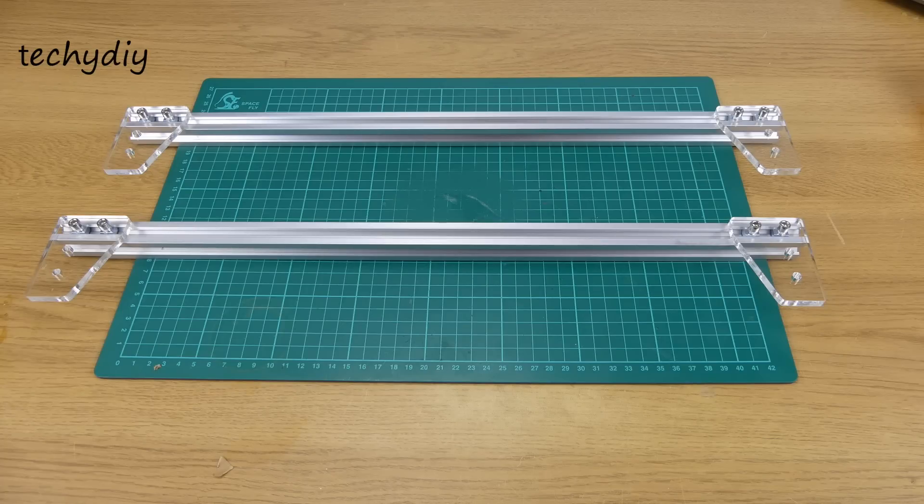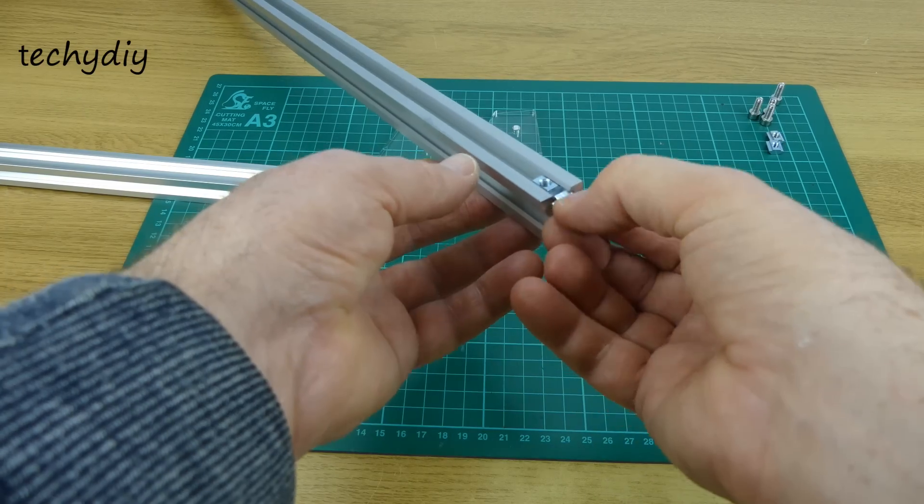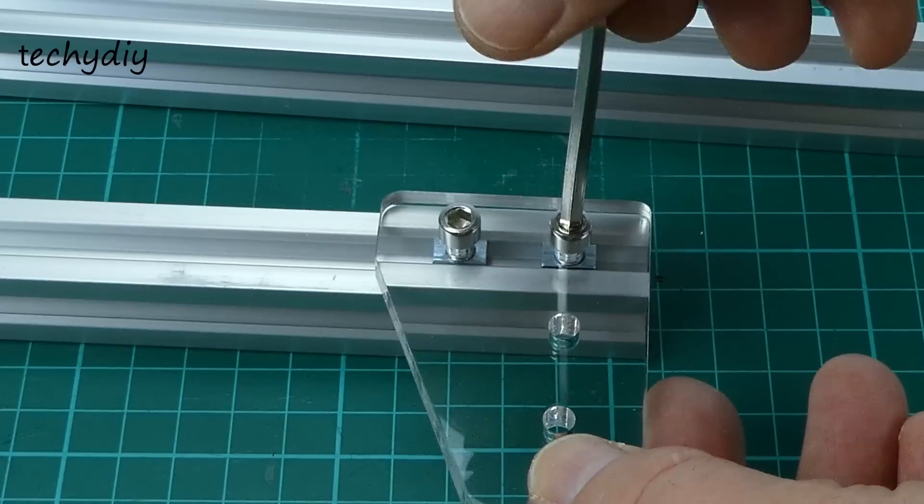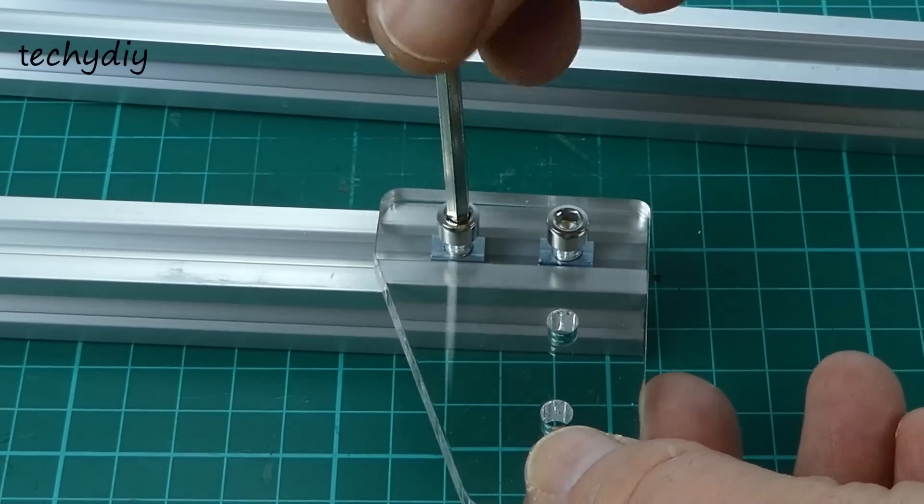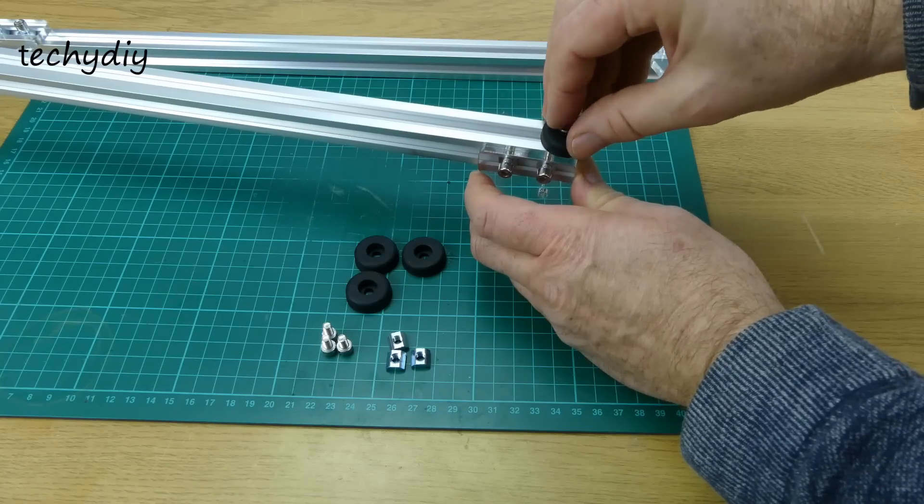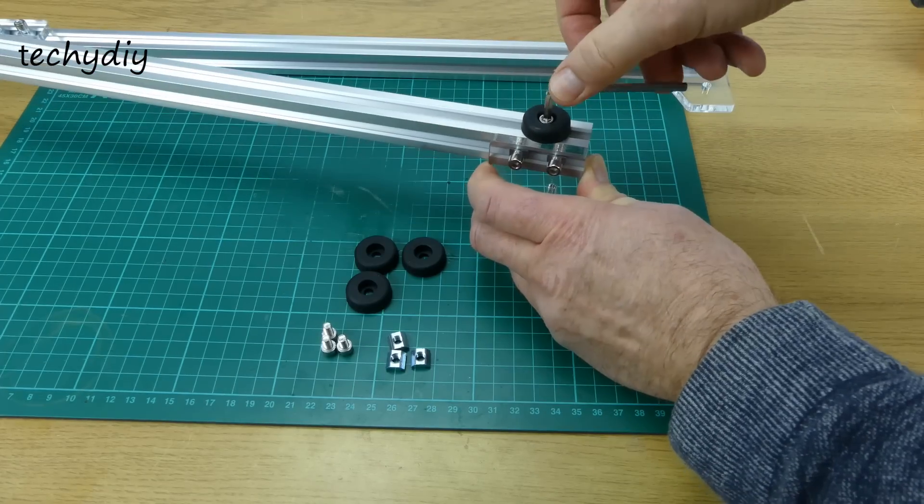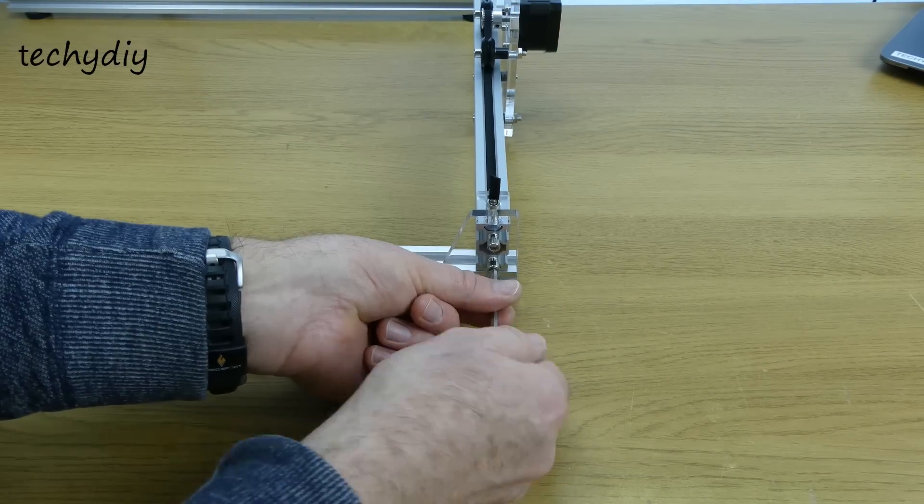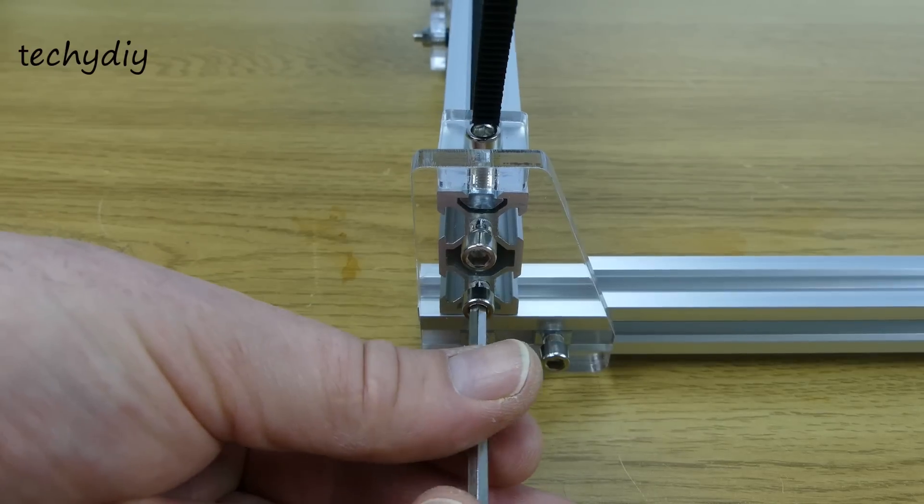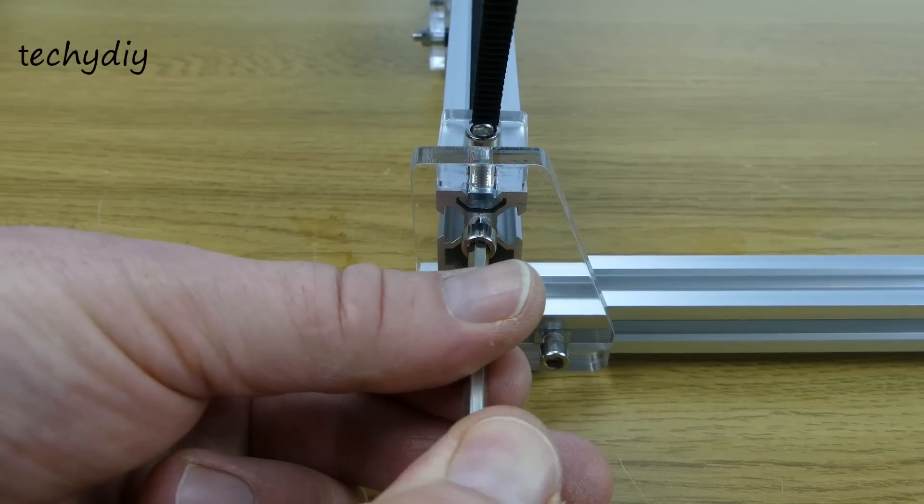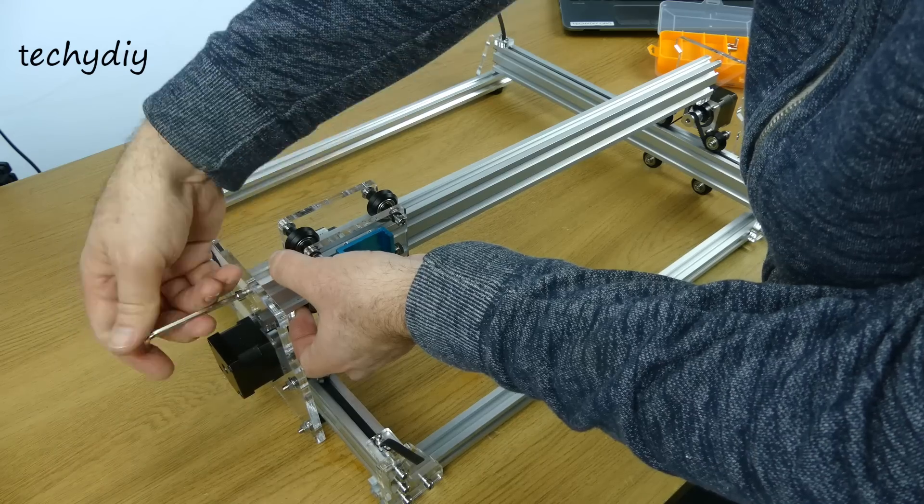Next was the front and the back of the frame, which consisted of fitting the four acrylic corners and then the rubber feet. The sides were screwed to the front and back and then the gantry was screwed in position.